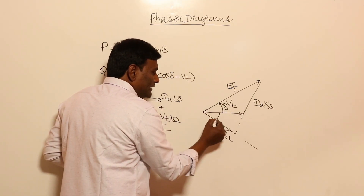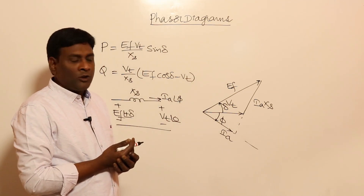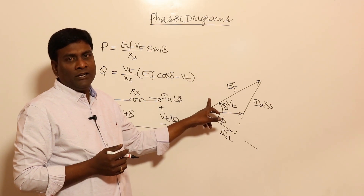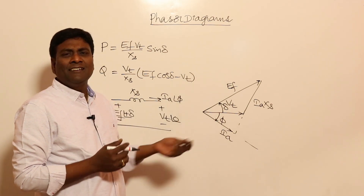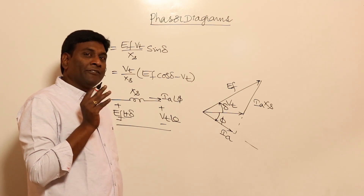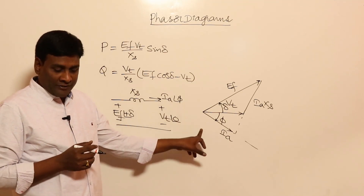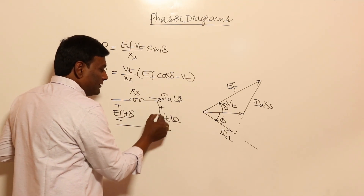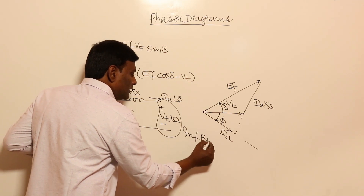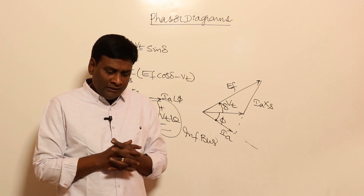The angle between Vt and Ef is delta (power angle), and the angle between Vt and Ia is phi (power factor angle). Now I'm going to draw the same phasor diagram with Vt as a vertical line, and Ia lagging or leading. For example, my alternator is connected with an infinite bus.